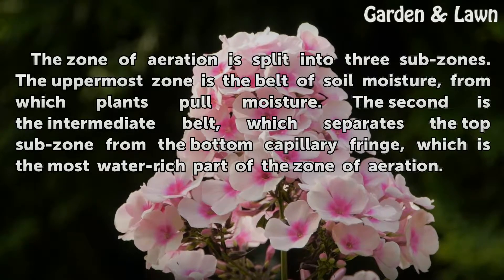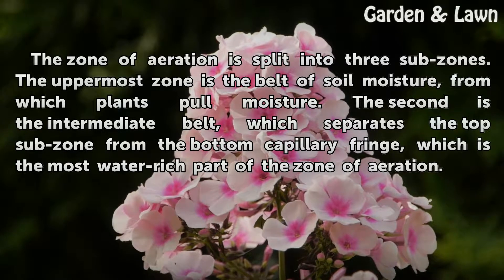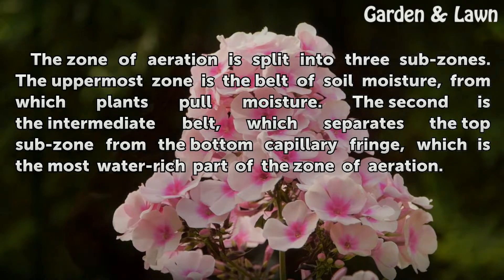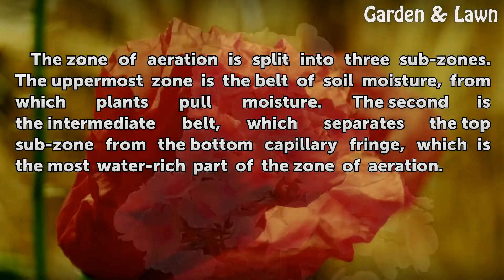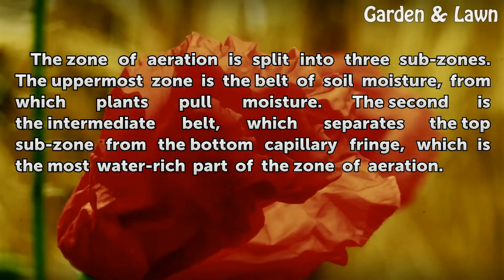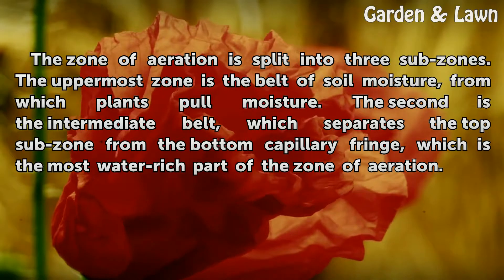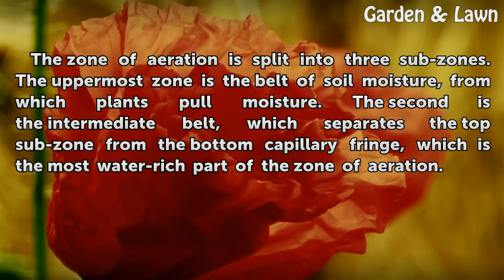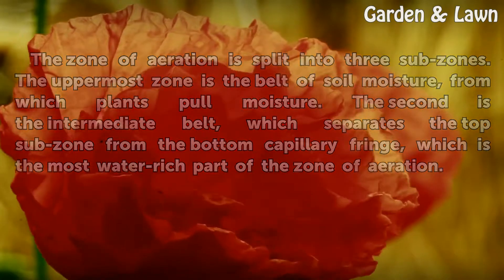The zone of aeration is split into three subzones. The uppermost zone is the belt of soil moisture, from which plants pull moisture. The second is the intermediate belt, which separates the top subzone from the bottom capillary fringe, which is the most water-rich part of the zone of aeration.